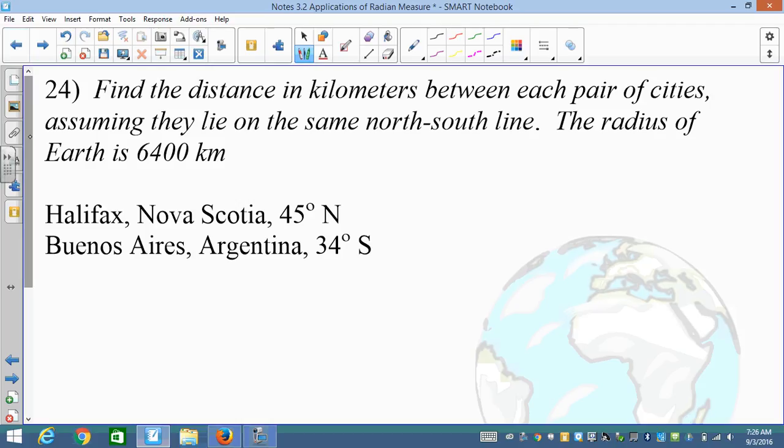We're going to continue using this idea. It says, find the distance in kilometers between each pair of cities, assuming they lie on the same north-south line. The radius—so those are longitudes—on the same north-south line. The radius of the earth is 6,400 kilometers. And they want you to answer this in kilometers.